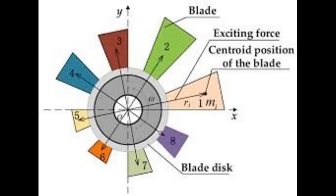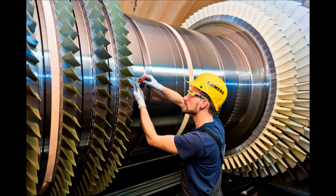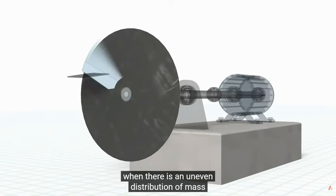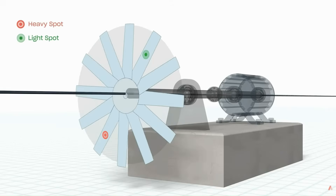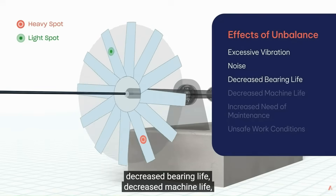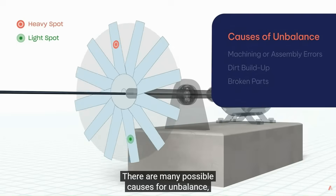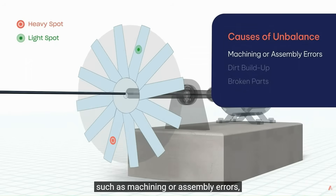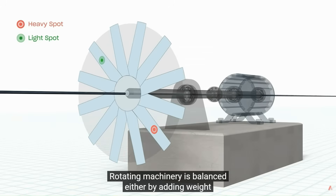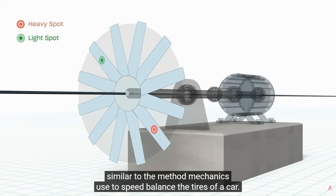Number three: rotational balance and vibration reduction. Every rotating part is balanced to reduce vibration, fatigue, and bearing wear. Bearings are placed strategically for load distribution. Rotational unbalance occurs when there is an uneven distribution of mass around an axis of rotation. It can give a rotating machine element eccentric movement, which can cause excessive vibration, noise, decreased bearing life, decreased machine life, increased need of maintenance, and unsafe working conditions. There are many possible causes for unbalance, such as machining or assembly errors, dirt buildup, and broken parts. Rotating machinery is balanced either by adding weight to the light spot or removing weight from the heavy spot, similar to the method mechanics use to speed balance the tires of a car.